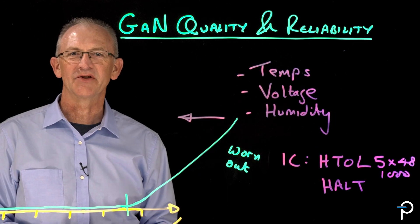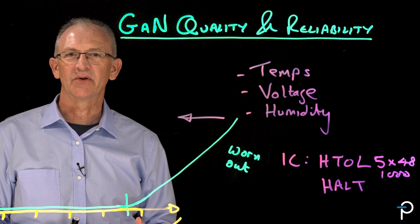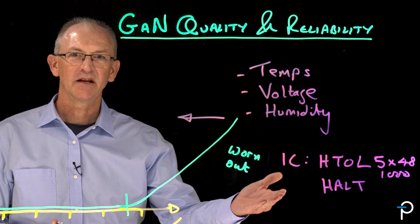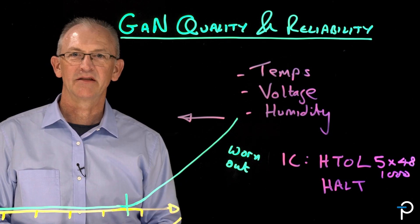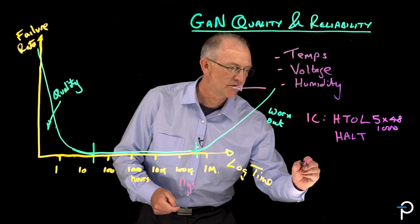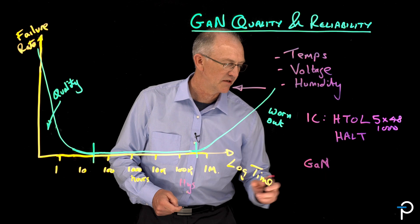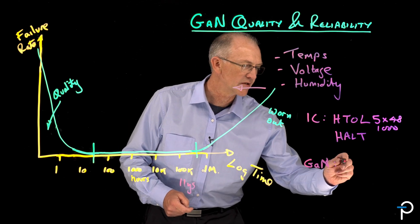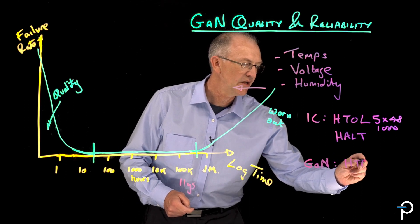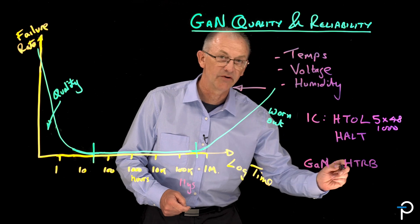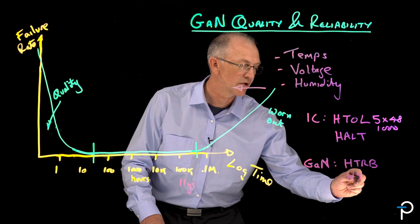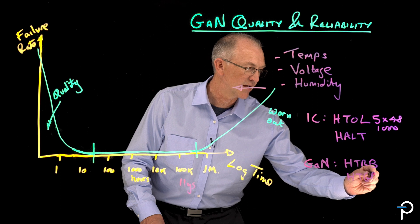But GaN is a new technology, and so we want to be doubly sure that the device inside the IC is robust and long-lived. So we do tests specifically designed for the GaN. One of those is HTRB, High Temperature Reverse Bias Test, and High Temperature Gate Bias Test.